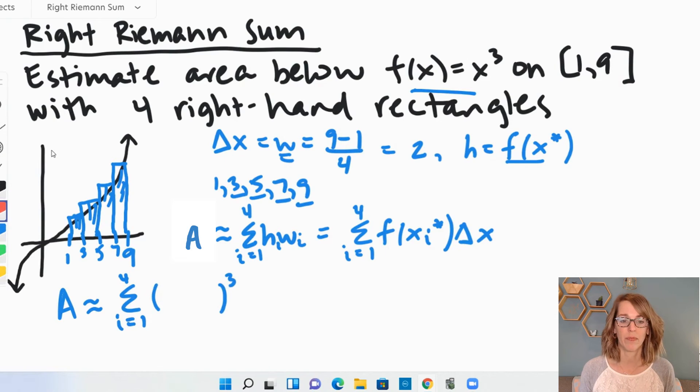I also want to figure out what that x sub i is. Let's go ahead and put that in red. So x sub i star. I'm not starting at 1. Instead, my first endpoint is going to be there at 3. So to figure these out, I'm going to do 1, and then I'm going to travel those widths or those delta x's. So 1 plus 1 delta x is going to get me to 3.